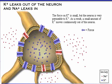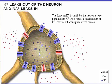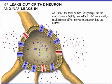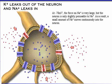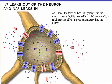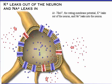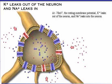The force on potassium is small, but the neuron is very permeable to potassium. As a result, a small amount of potassium moves continuously out of the neuron. At minus 70 millivolts, the force on sodium is very large, but the neuron is only slightly permeable to sodium. As a result, a small amount of sodium moves continuously into the neuron. At minus 70 millivolts — the resting membrane potential — potassium leaks out of the neuron and sodium leaks into the neuron.